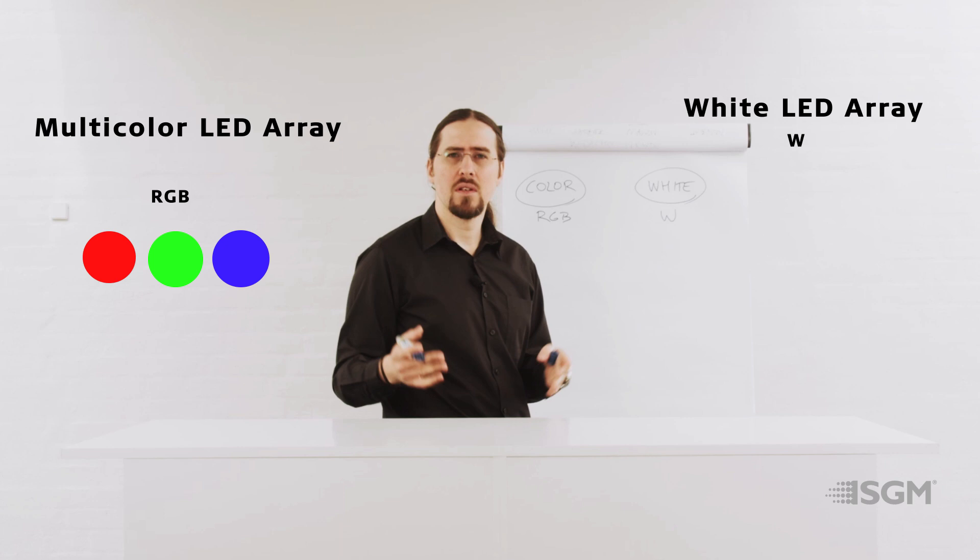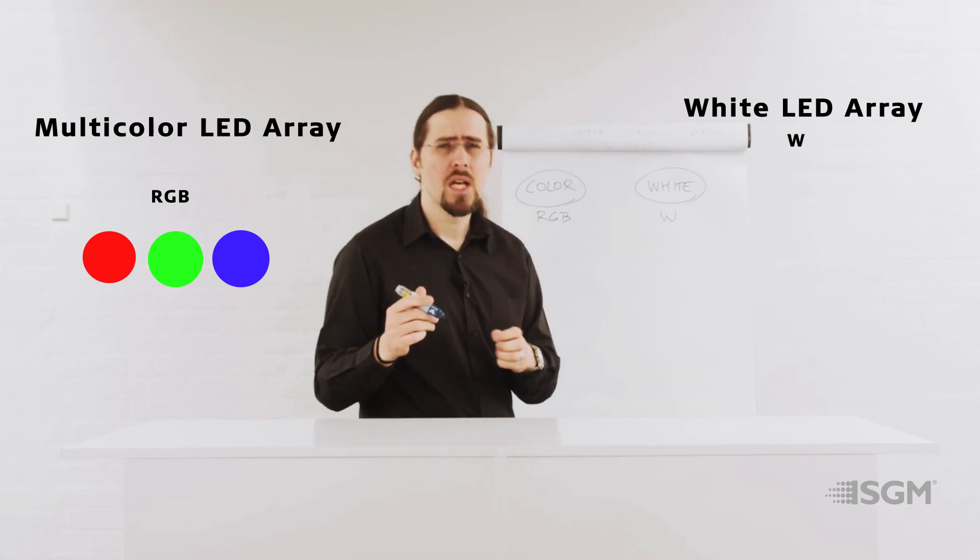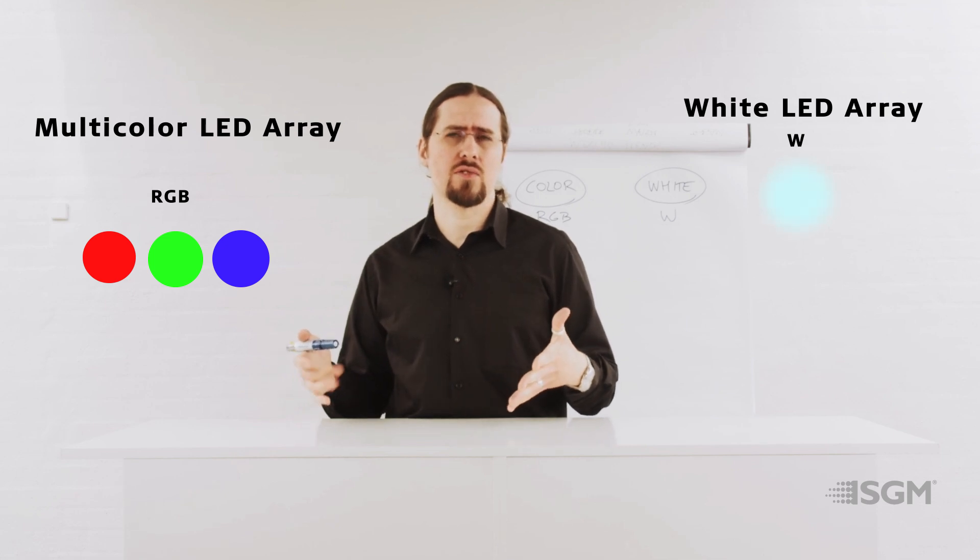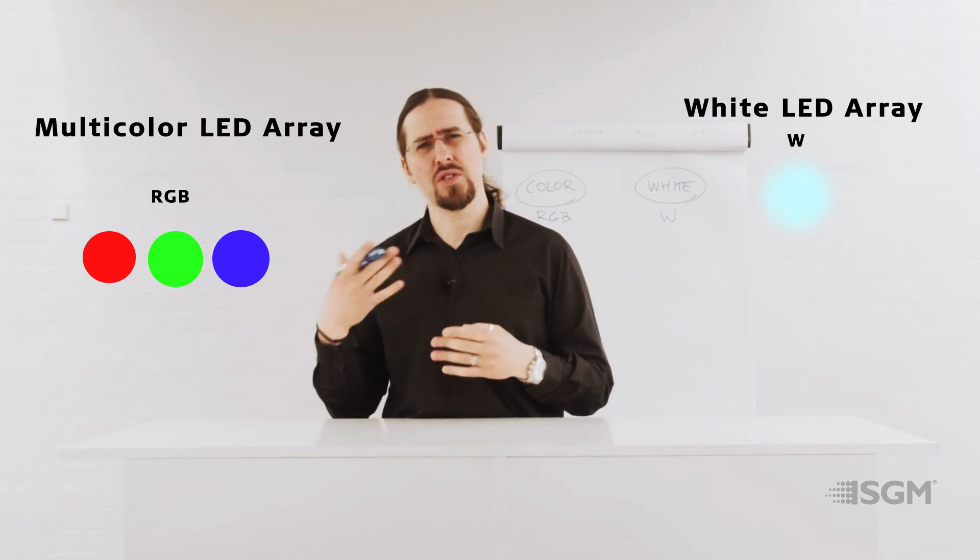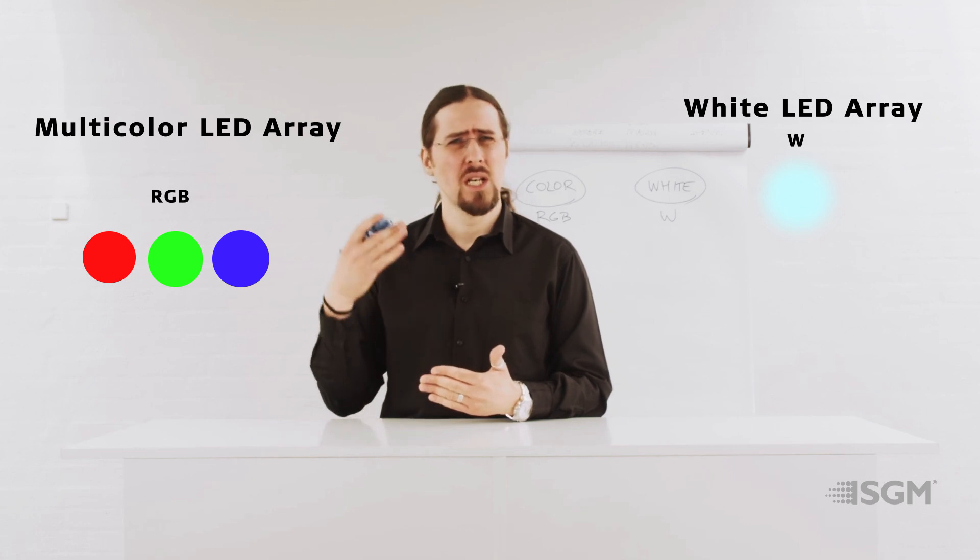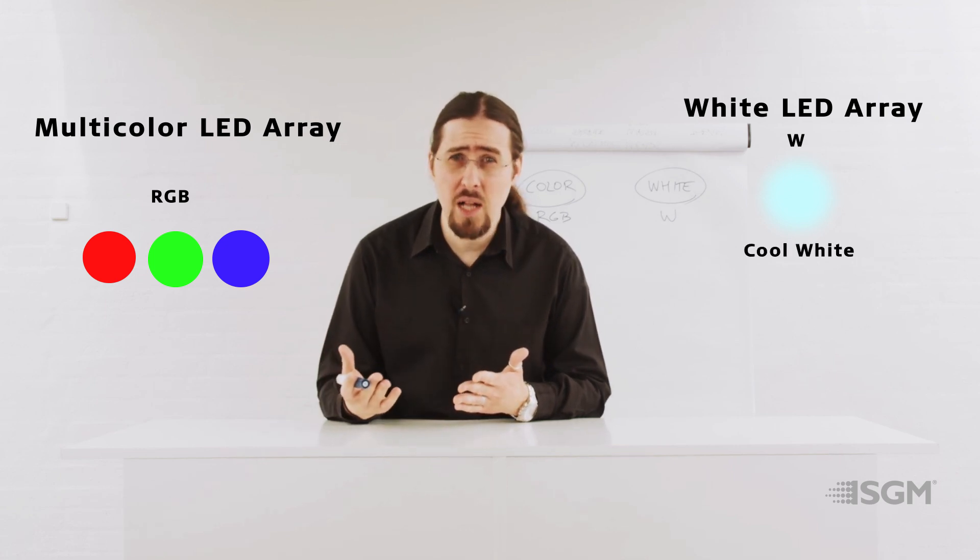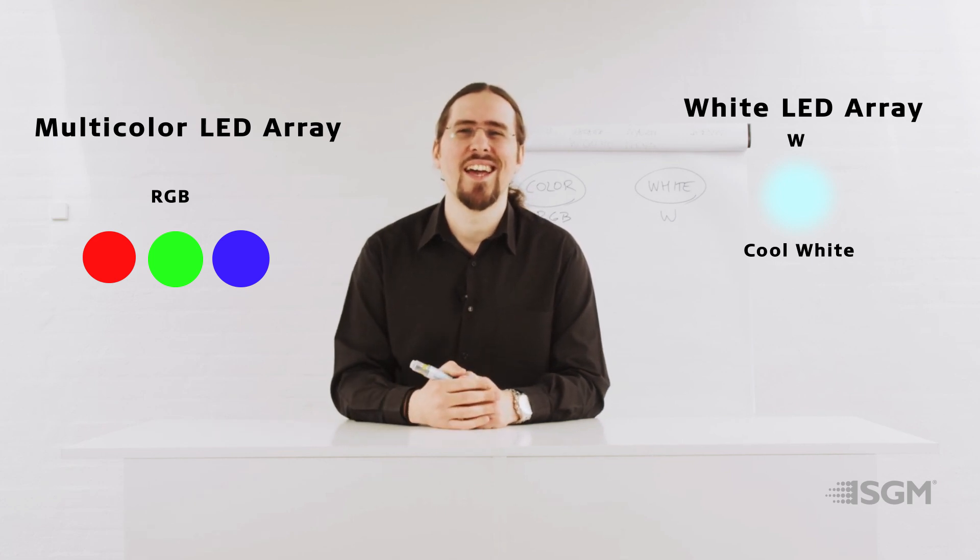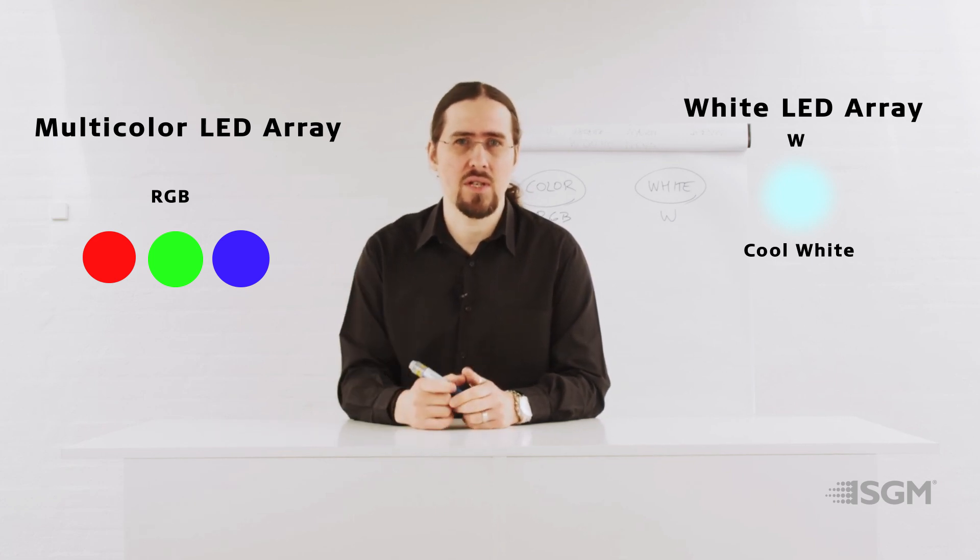Normally, when we use this W letter, it's because we are using a cool white light source, or a cold white light source. So we are talking about color temperature of 5,000 Kelvin, sometimes 5,600 Kelvin, even 6,500 Kelvin, and even above that, like 7,000 Kelvin.